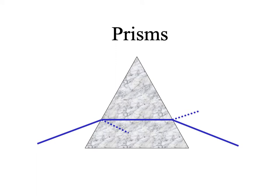Let's talk about prisms more generally. By convention in optics, rays of light move from left to right. As a ray of light moves from air into glass, it bends towards the normal. As it exits the prism, it bends away from the normal. The net result is that the ray of light bends towards the base of the prism. By convention, we describe prisms by the location of their base, not their apex — though a lot of the interesting stuff happens in the direction of the apex.